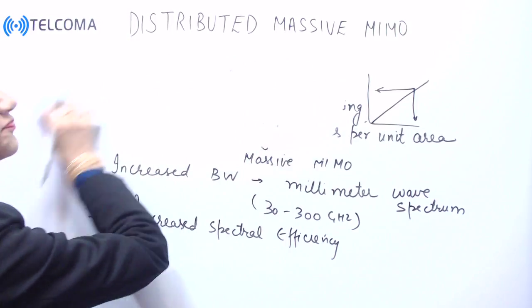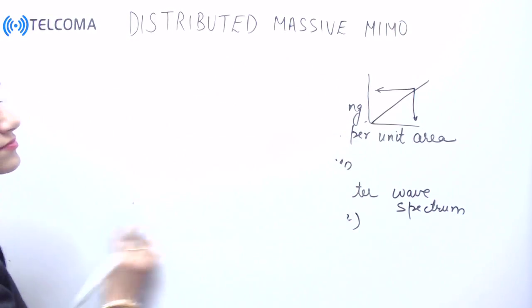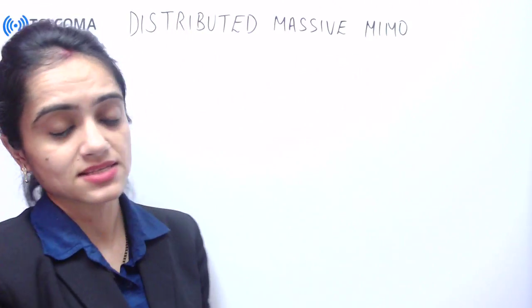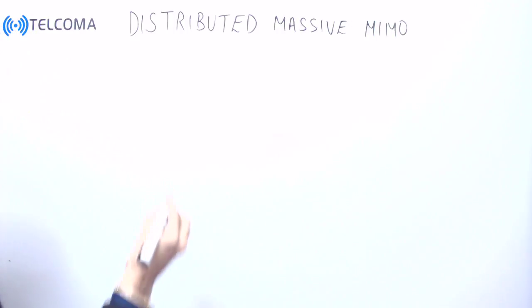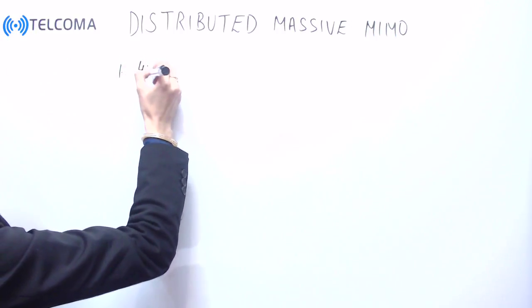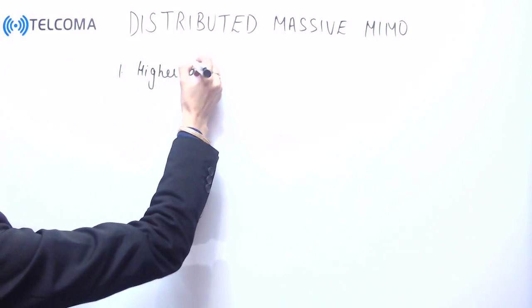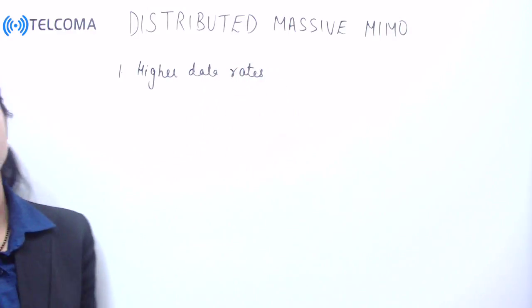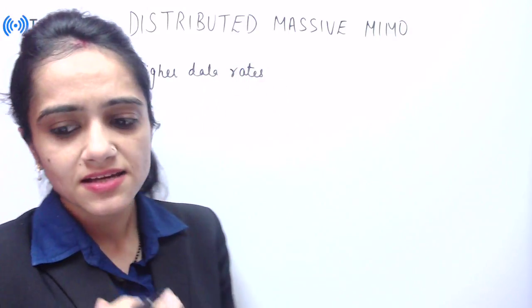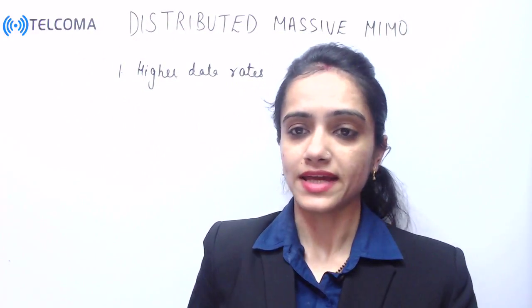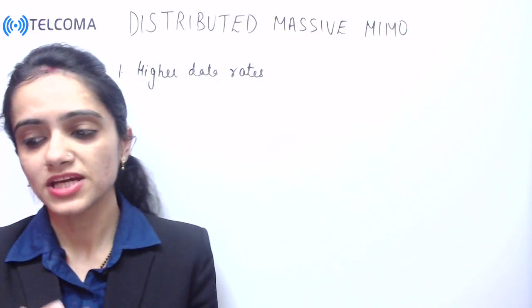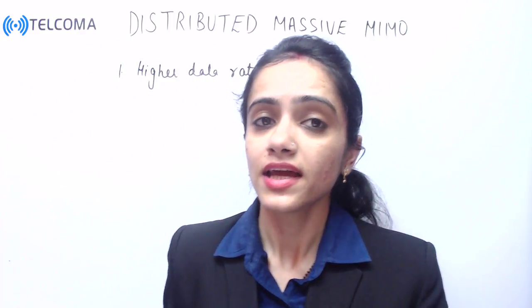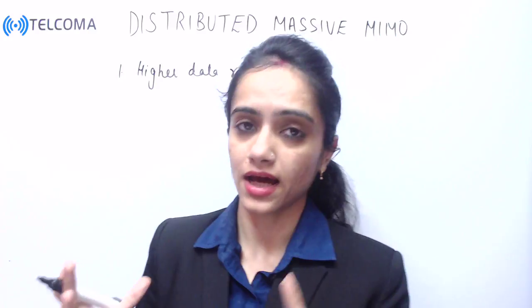Now let's talk about the basic principles of distributed massive MIMO. The very first principle is higher data rates. Owing to the extremely high number of antennas, the number of spatial streams that can be transmitted keeps on increasing.